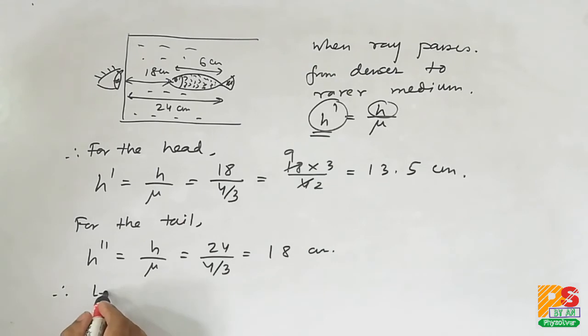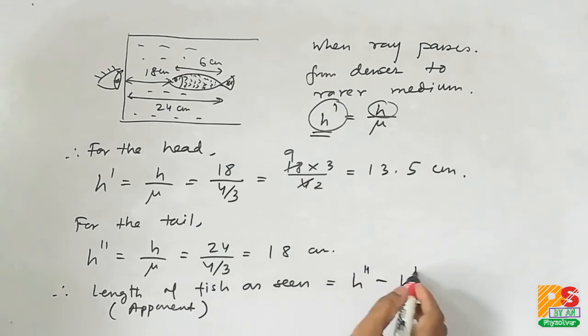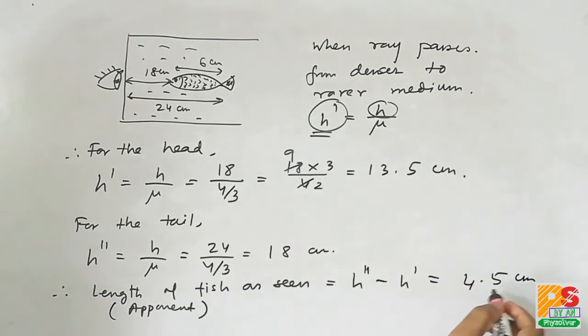Therefore, the apparent length of the fish as seen by the observer will be h'' minus h', that is 18 minus 13.5, which equals 4.5 centimeters. That's our answer.